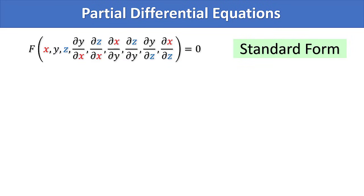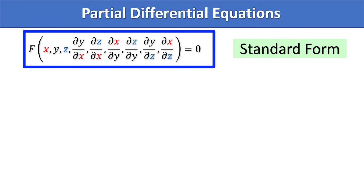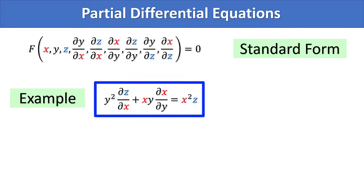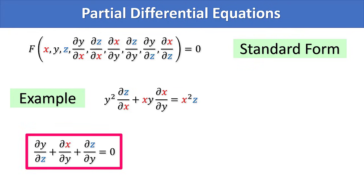The standard form of partial differential equation is also flashed on the screen. It is nothing but an equation containing function of x, y, and z, and partial derivatives with respect to x, y, and z. For example, y squared times partial derivative of z with respect to x, plus x times y times partial derivative of x with respect to y, equals x squared times z. Another example is partial derivative of y with respect to z, plus partial derivative of x with respect to y, plus partial derivative of z with respect to y, equals 0.